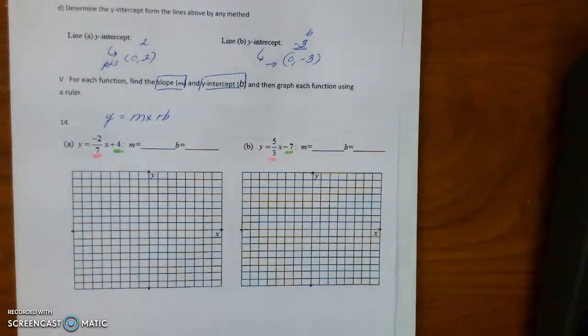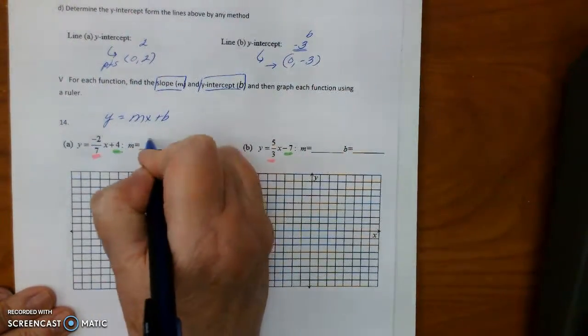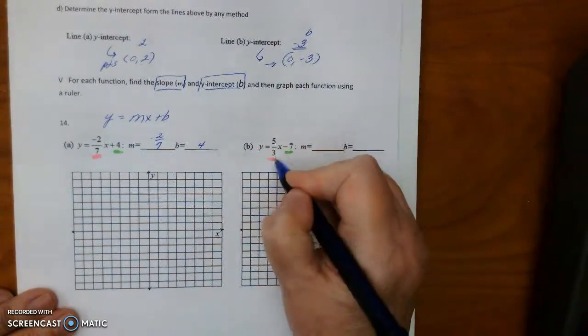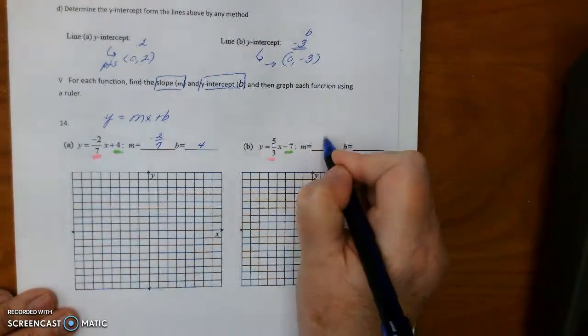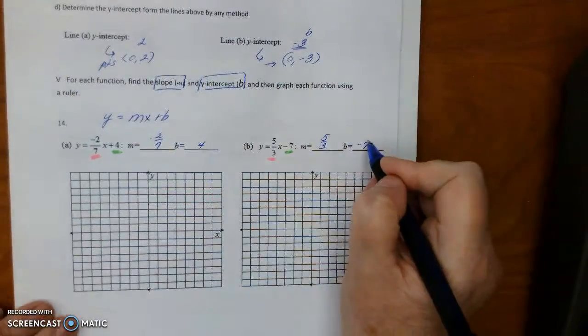Now it's just asking for the numbers. So the slope would be negative 2 over 7, and the B would be 4. This would be 5 over 3, and this would be negative 7, okay?